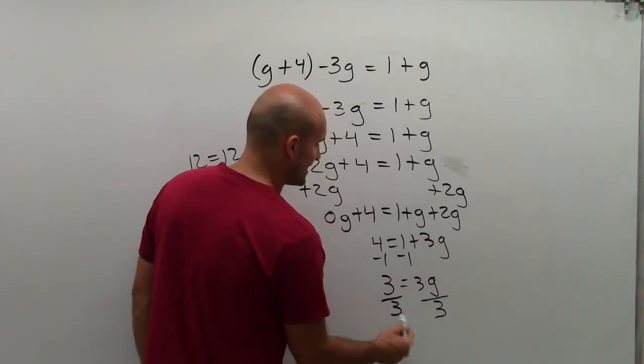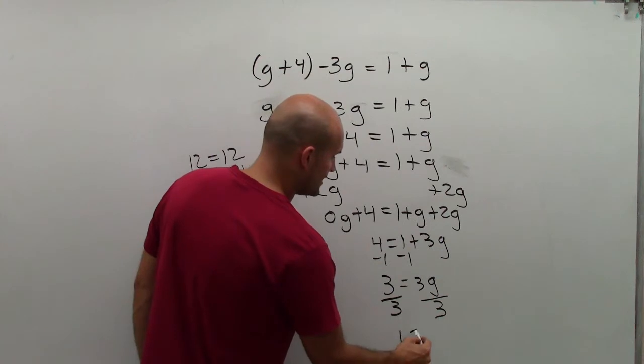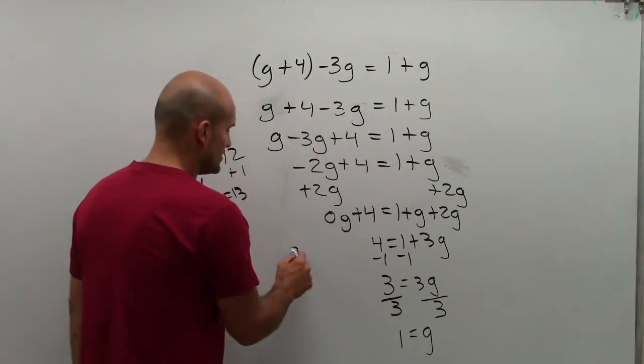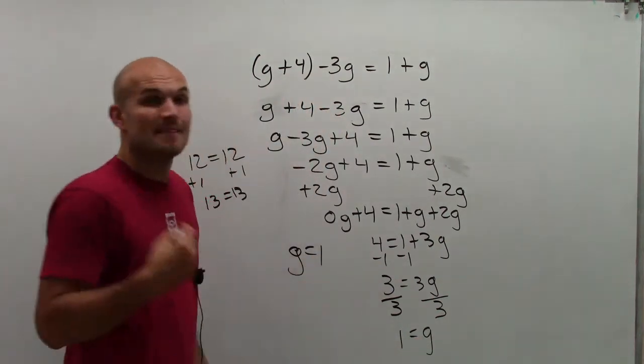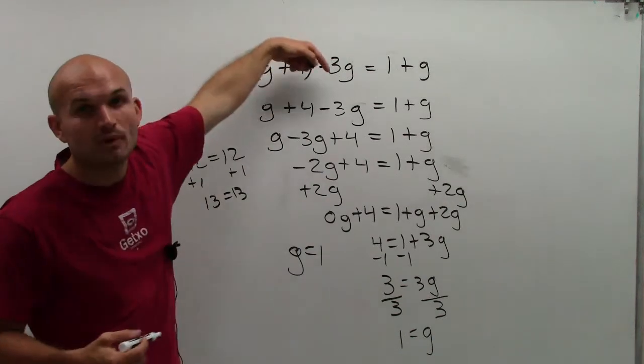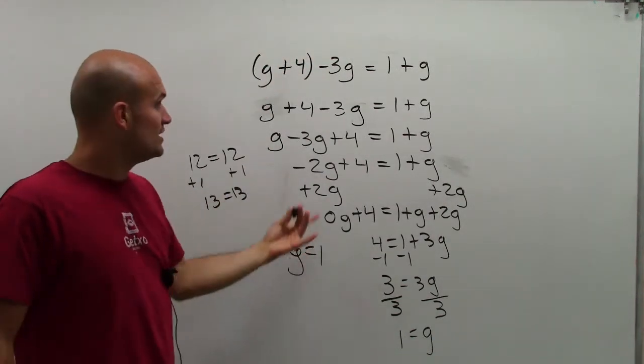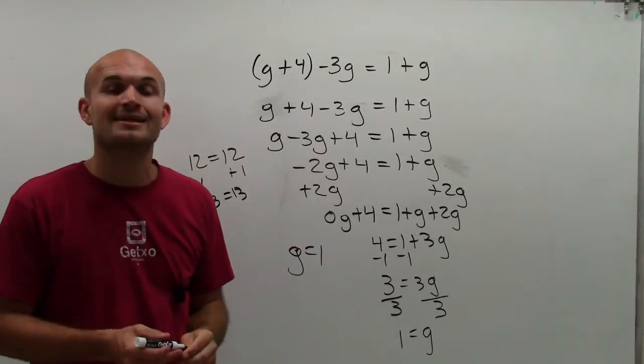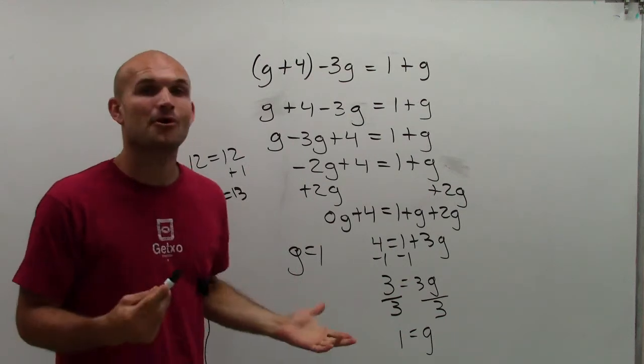Now, undo multiplication by dividing. And what you get is 1 equals g, which we can rewrite as g equals 1. That means the solution for this equation is 1. Whenever g equals 1, this equation is going to be true. There you go. Hope that helps. Thanks.